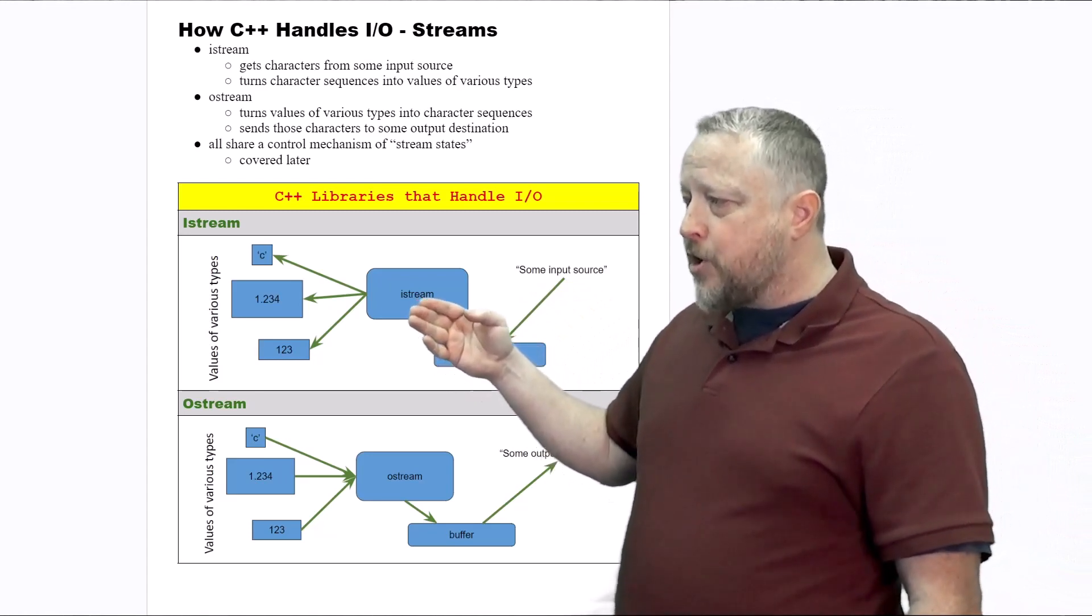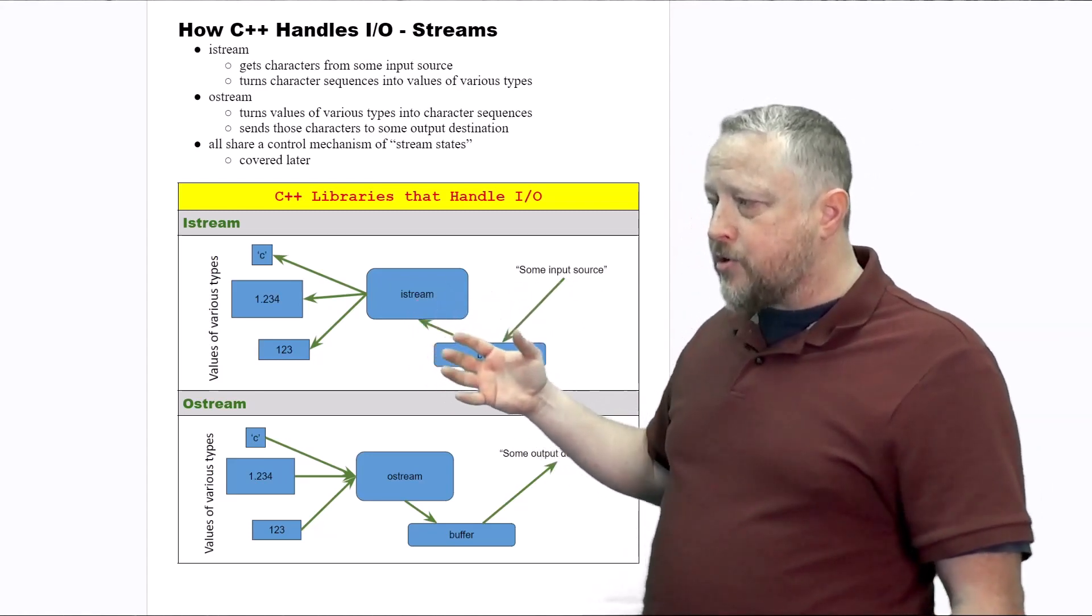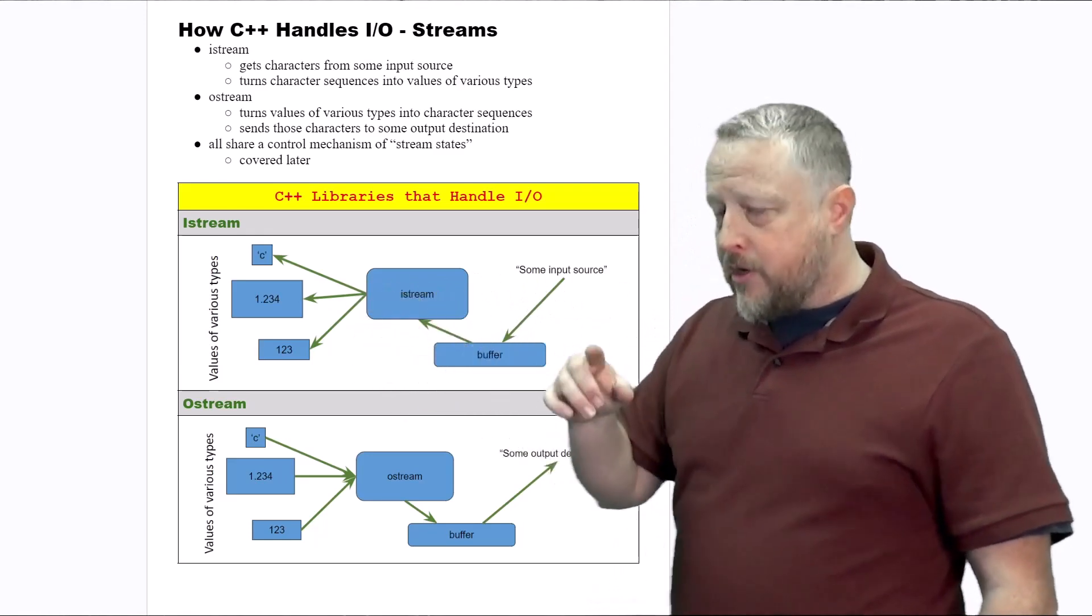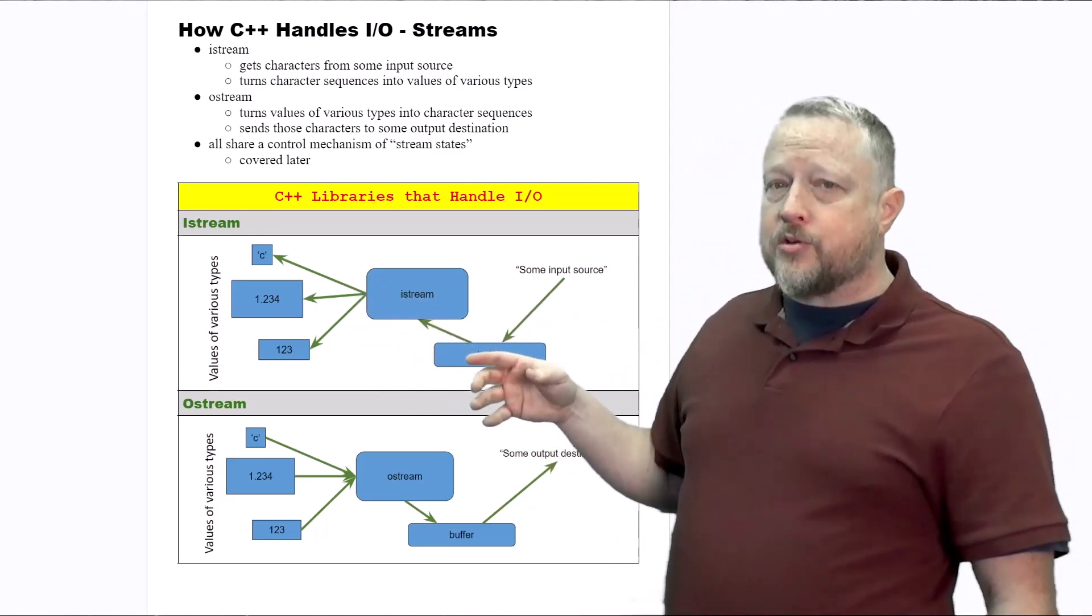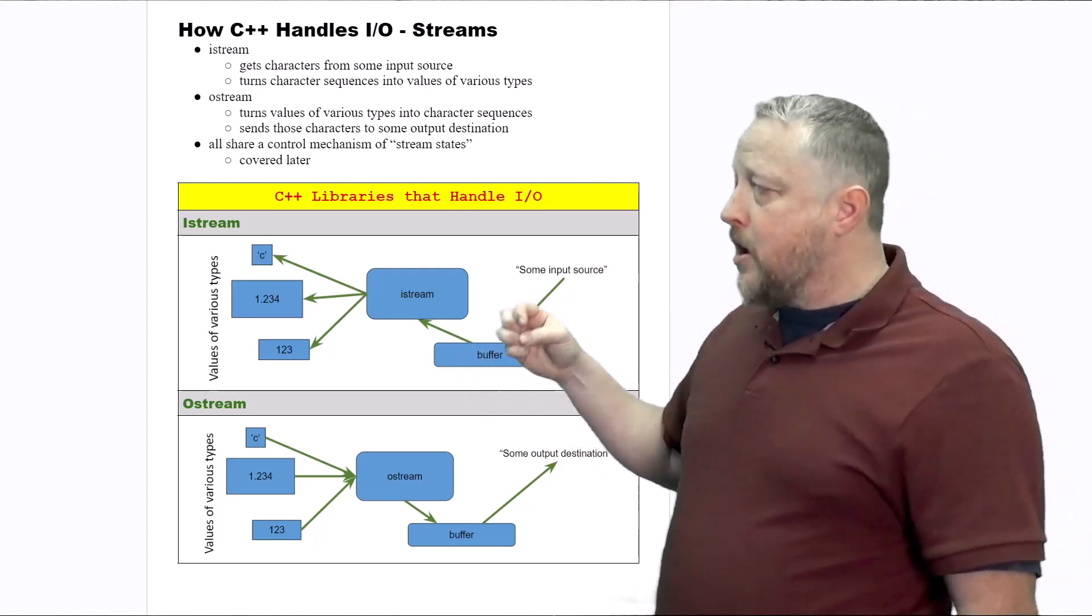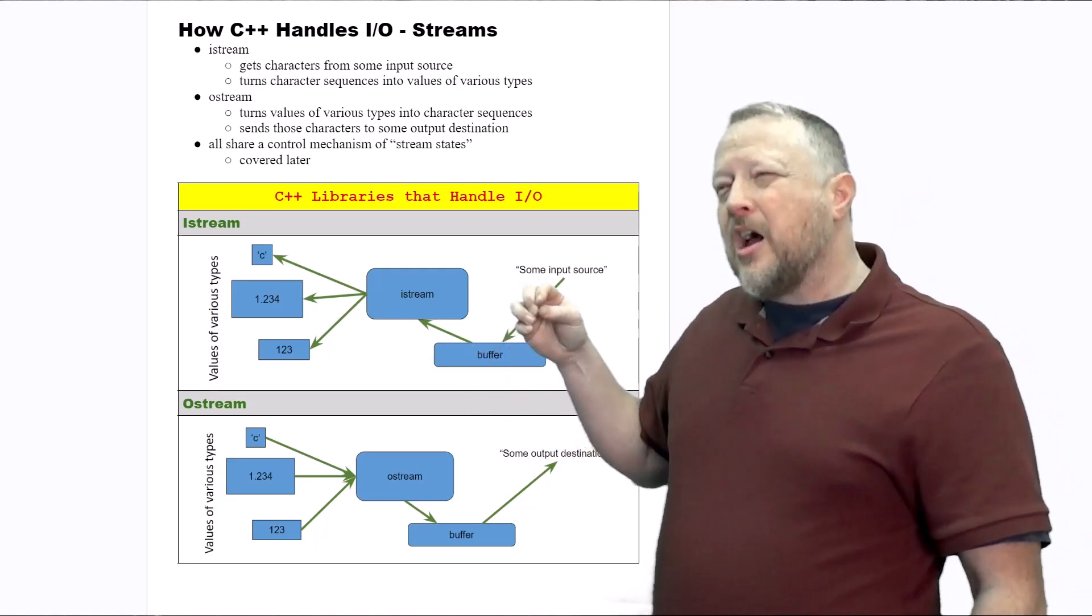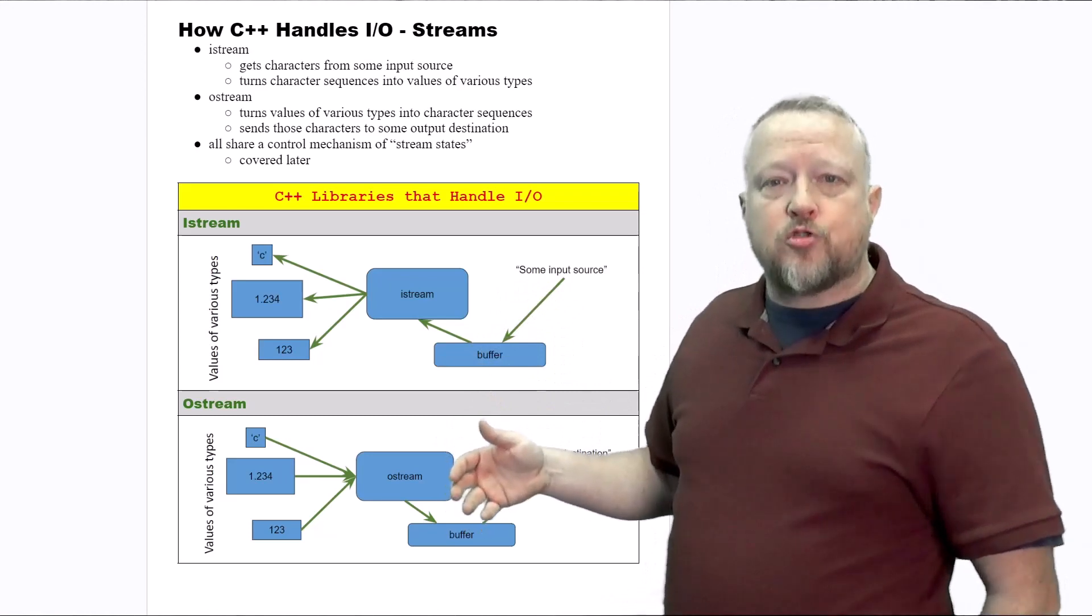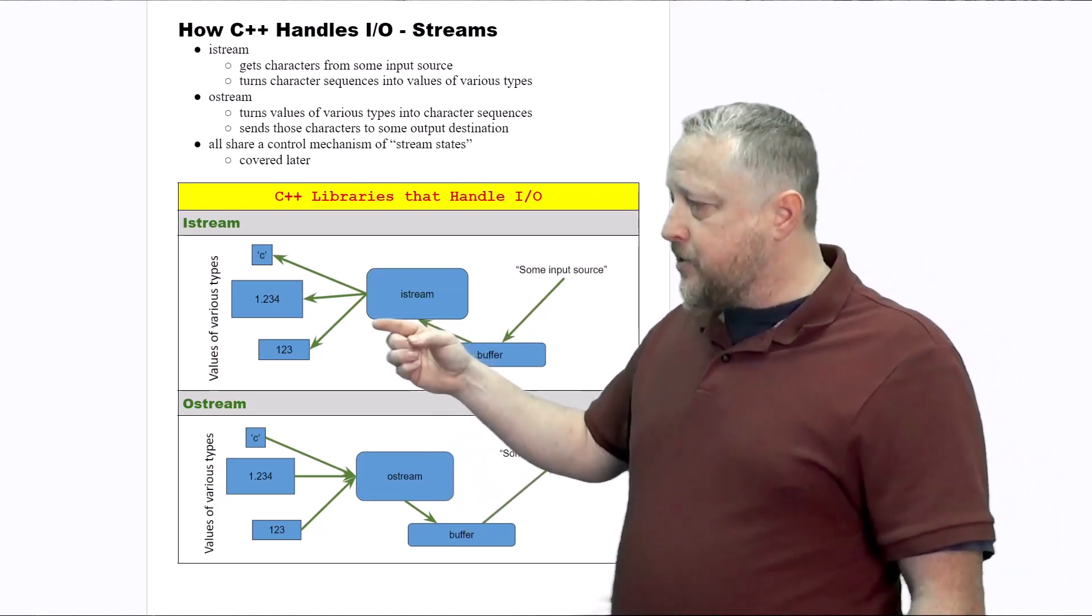The iStream is then going to turn those characters into the various types. Notice, by the way, I did say characters. Everything's treated in C++ and many languages as first a string or a buffer of strings or characters, and then it says,